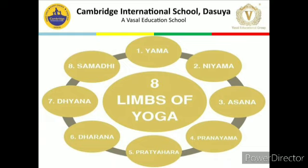There are 8 elements of Yoga. First is Yama, second is Niyama, third is Asana, fourth is Pranayama, fifth is Pratyahara, sixth is Dharana, seventh is Dhyana, and last is Samadhi.